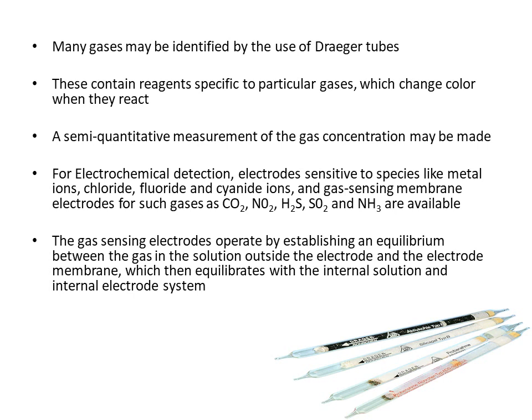Many gases may be identified by the use of Dräger tubes. These contain reagents specific to particular gases, which change color when they react with that gas. A semi-quantitative measurement of the gas concentration may be made by the use of these Dräger tubes.